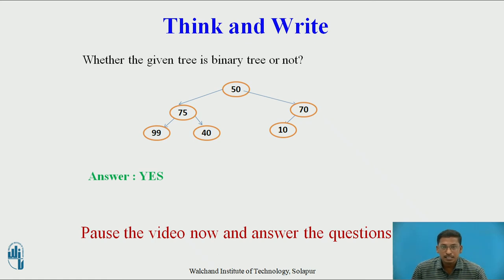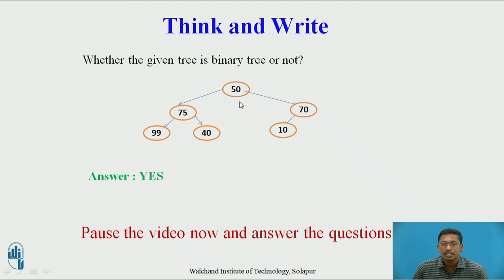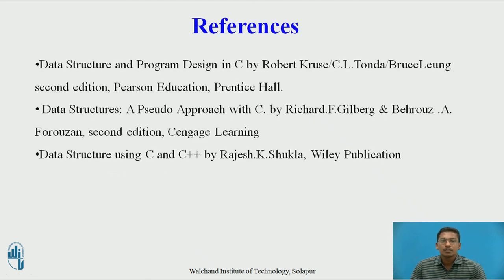The answer is yes. There is a basic difference between binary tree and binary search tree: a binary search tree is a binary tree with the extra property that all nodes on the left side are less than the parent and all nodes on the right side are greater than the parent. In the question, I asked whether the tree is a binary tree — in a binary tree each node can have a maximum of two children. In this example, each node has a maximum of two children, so it is a binary tree, but it is not a binary search tree.